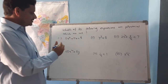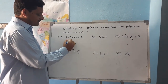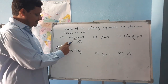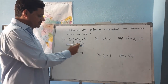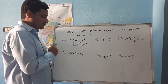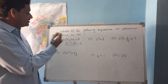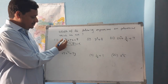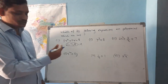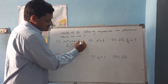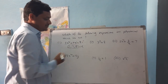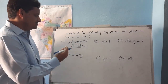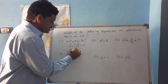For the first expression, 5x² + 7x + 8: the coefficients are 5, 7, and 8, which are all real numbers. The powers of x are 2, 1, and 0 — all non-negative integers. So this expression is a polynomial.